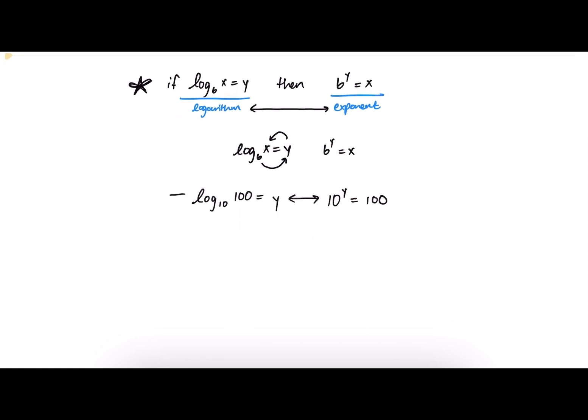One side note is log base 10 is actually the most standard form of the logarithm. So if you see something that looks like this, this is the exact same thing. There's like an invisible 10 here. Log base 10 is the most common form of the logarithm, so unless another number is specified, you can assume that it is an unspoken 10 there.